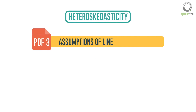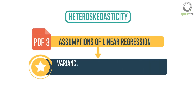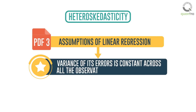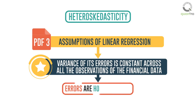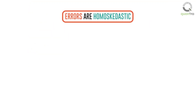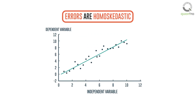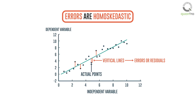Let us begin with heteroscedasticity. If we correctly recall, one of the assumptions of linear regression is that the variance of its errors is constant across all the observations of the financial data. In other words, we can say that the errors are homoscedastic. This graph shows the values of the dependent and independent variables and a fitted regression line with homoscedastic errors. These errors or residuals are the vertical lines between the plotted or actual points and the fitted regression line or forecasted points.